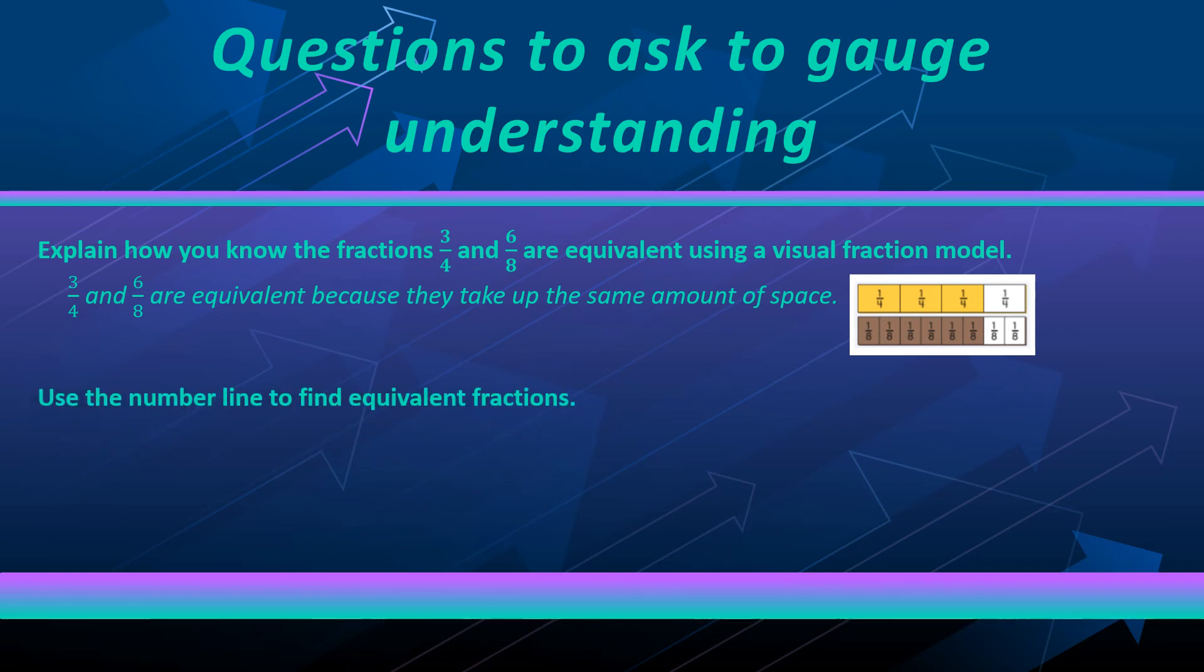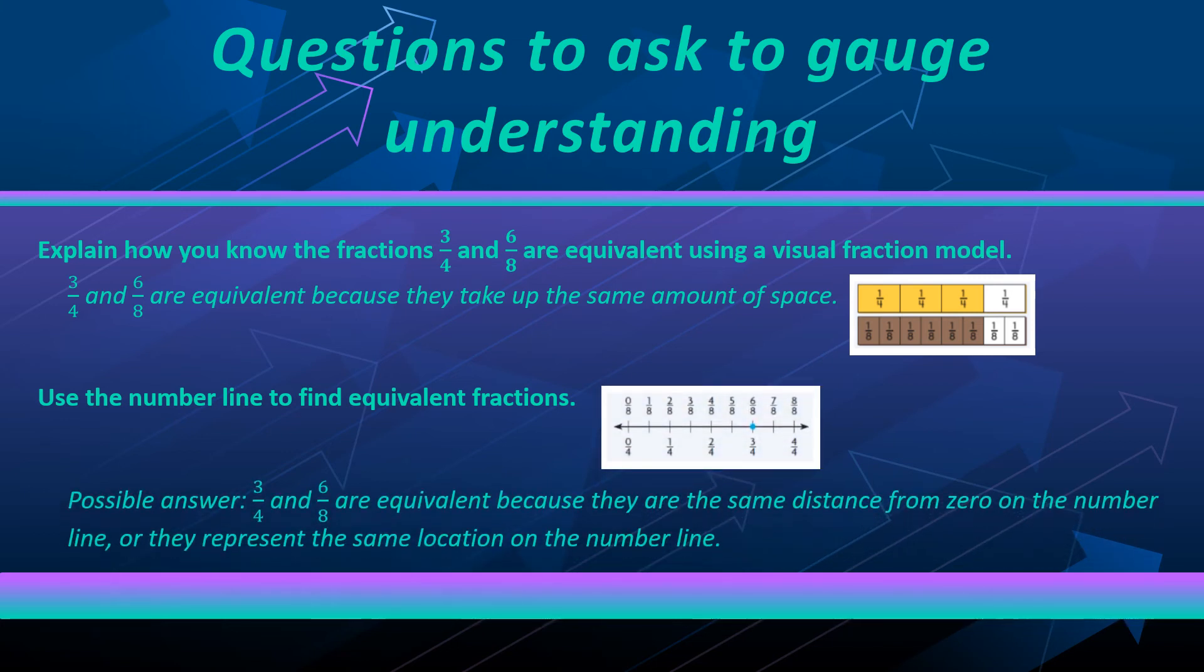You could ask the same question, but encourage them to use a number line to decide if the fractions are equivalent. On the number line, students can then explain that they know six-eighths and three-fourths are equivalent because they are the same distance from zero or they are at the same location on the number line.